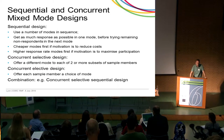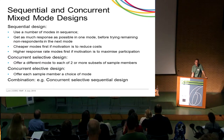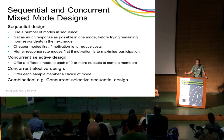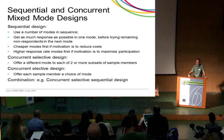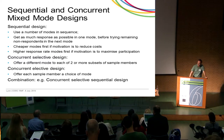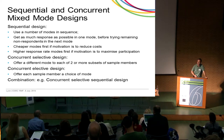Very often we are talking about sequential mixed-mode designs, meaning we try to collect as much survey data as possible in one chosen mode first, do our best in that mode, and then decide to follow up all the people who haven't yet responded in a different mode. If our main motivation is to reduce costs, we'll probably use the cheapest mode first to get as much data as we can cheaply, and then only follow up non-responders in a more expensive mode.